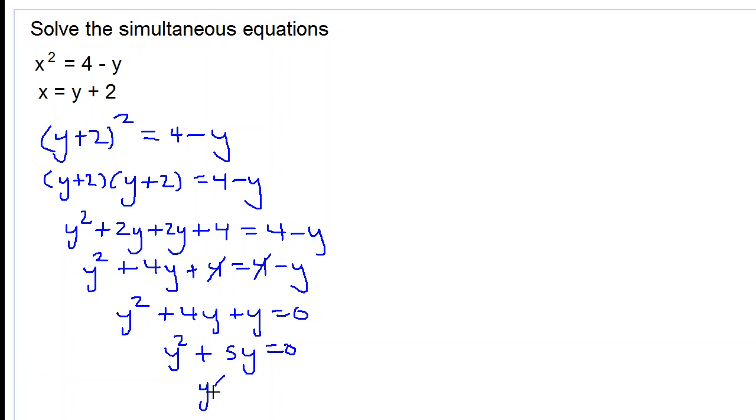We now factorize, taking out the y. So we have y into y plus 5 is equal to 0. There are two possibilities here.